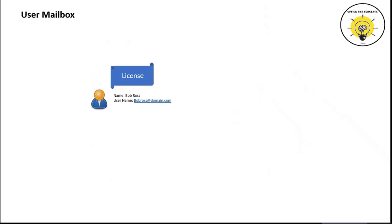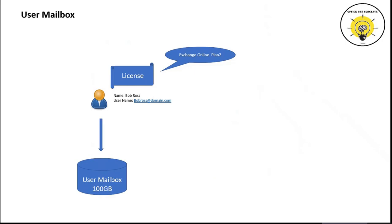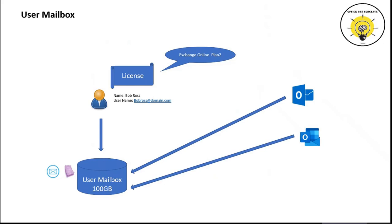If I assign a license, all of the services which are part of that license will be provisioned for this user account. Let's assume I have assigned Exchange Online Plan 2 license for Bob Ross. Exchange Online Plan 2 is a license which provides 100 GB of mailbox storage space. Once this license is assigned, a 100 GB user mailbox will be provisioned for Bob Ross. This user will be able to send and receive emails and create meetings from his calendar. He will be able to log into Outlook and OWA using his user principal name and password. This is the user mailbox.